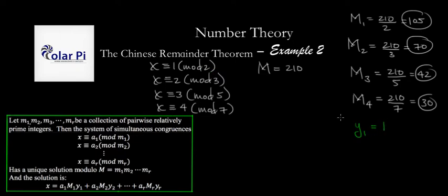Why 1? Because 1 times 105 is 1 more than a multiple of 2. 104 is the last multiple of 2 before you get to 105. So, that was easy.